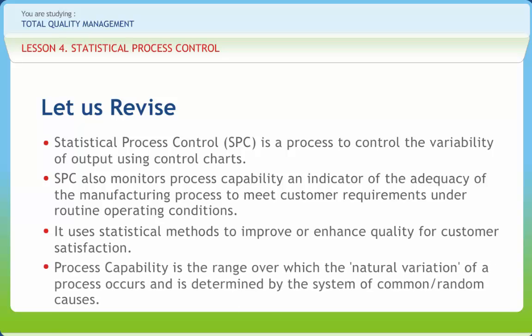Process capability is the range over which the natural variation of a process occurs and is determined by the system of common or random causes.